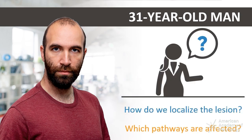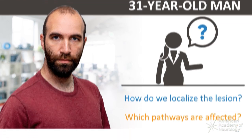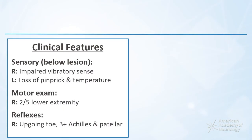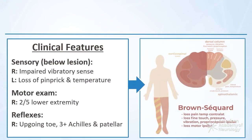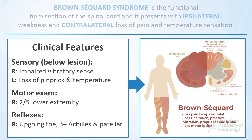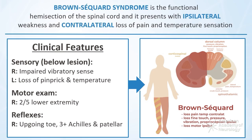Which pathways are affected? Based on the clinical features, Brown-Séquard syndrome is the most likely etiology. Brown-Séquard syndrome is a functional hemisection of the spinal cord. It presents with upper motor neuron weakness and proprioceptive loss ipsilateral to the site of injury, as well as loss of pain and temperature sensation contralateral to the injury.